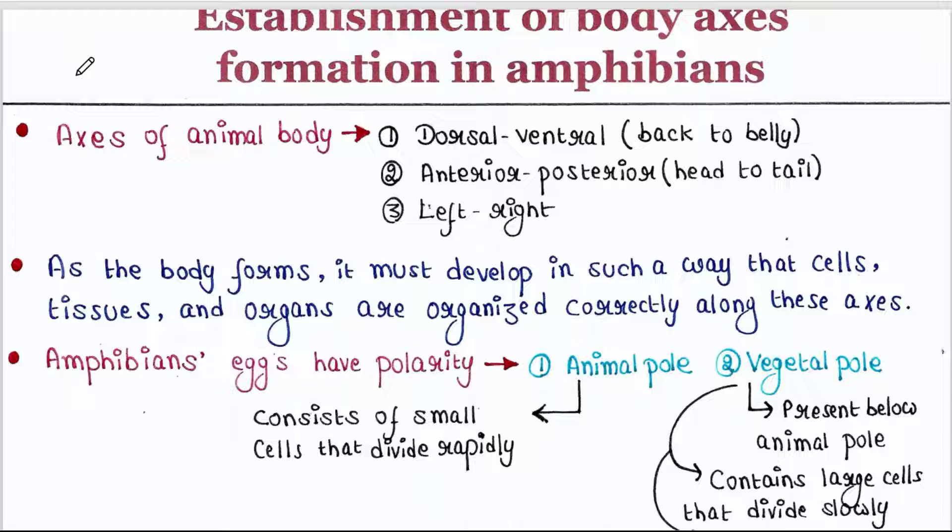There are three main different types of axes in animal body: dorsal-ventral axis, that is back to belly; anterior-posterior axis, that is head to tail; and left-right axis. As the body forms, it must develop in such a way that cells, tissues, and organs are organized correctly along these axes.